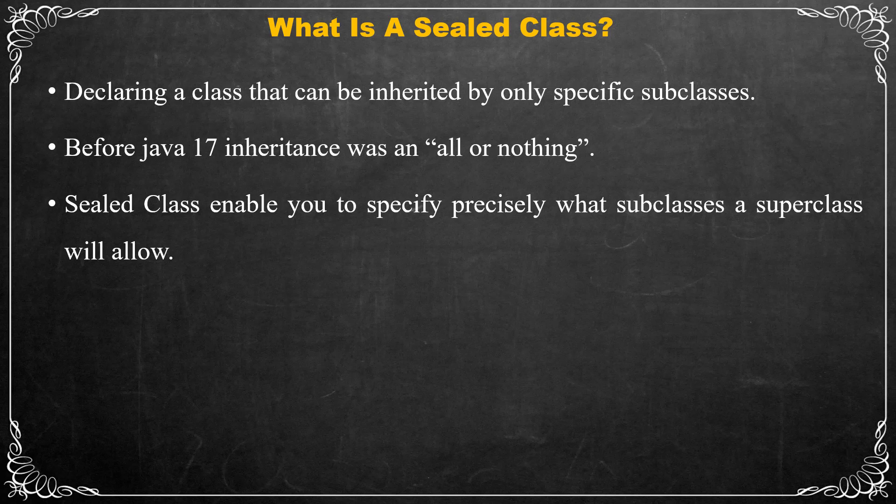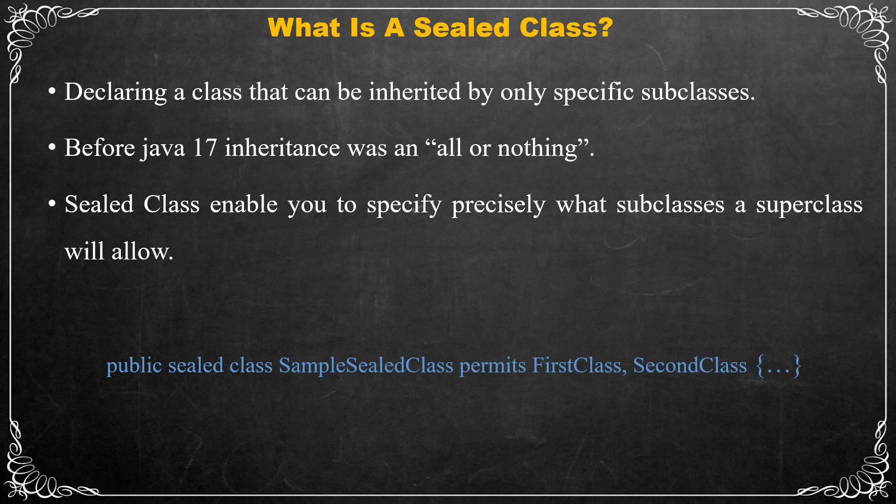We will discuss sealed interfaces in the next video. In order to declare a sealed class, you should add the sealed keyword, then after the class name include a permits clause that specifies the allowed subclasses. Both sealed and permits are context-sensitive keywords that have special meaning only in a class or interface declaration; outside of that, they are unrestricted and have no special meaning.